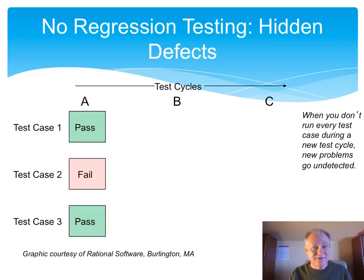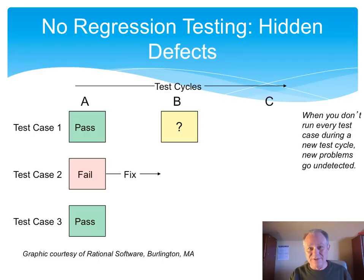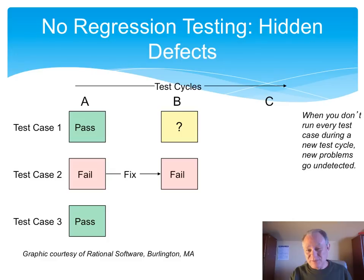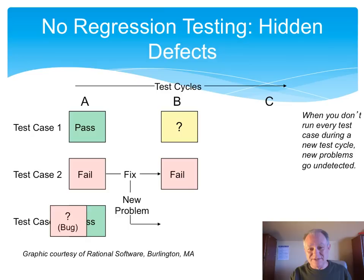So, only testing the failures and fixes, we would report that second test case as a failure, and hopefully someone would fix it. In the second cycle of testing, we don't test case one because we're only testing the fixes. We test that fix and realize it failed, so we report it again. But what we don't realize, because we're only testing the fix, is that now a new problem has been introduced.